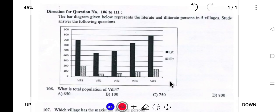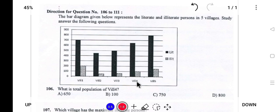Village 5 has 800 literates and the illiterate count is between 100 and 200, so it will be 150. Now, what will be the total population of each village? Village 1: 700 plus 200; Village 2: 450 plus 50; Village 3: 500 plus 70; Village 4: 650 plus 100; Village 5: 800 plus 150.